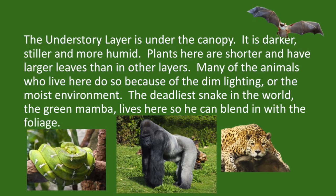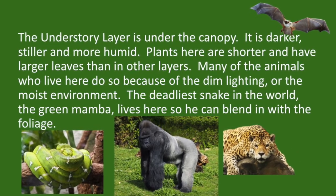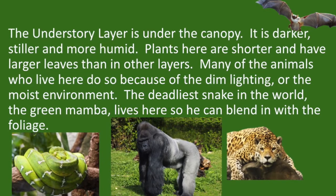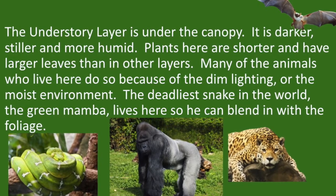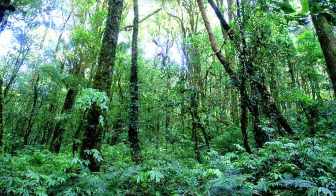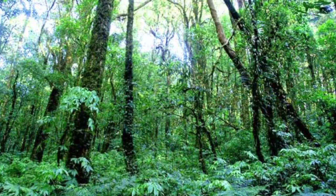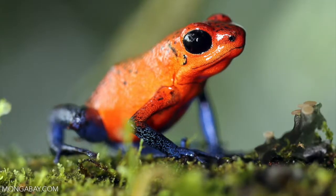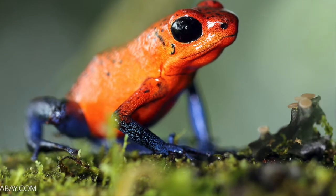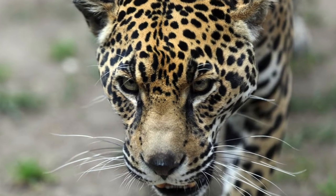The understory layer is under the canopy. It is darker, stiller, and more humid. Plants here are shorter and have larger leaves than in other layers. Many of the animals who live here do so because of the dim lighting or the moist environment. The deadliest snake in the world, the green mamba, lives here so that it can blend in with the foliage.